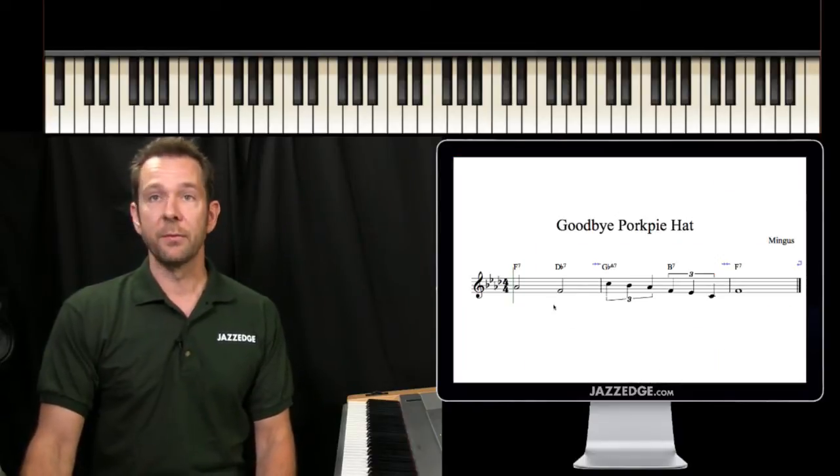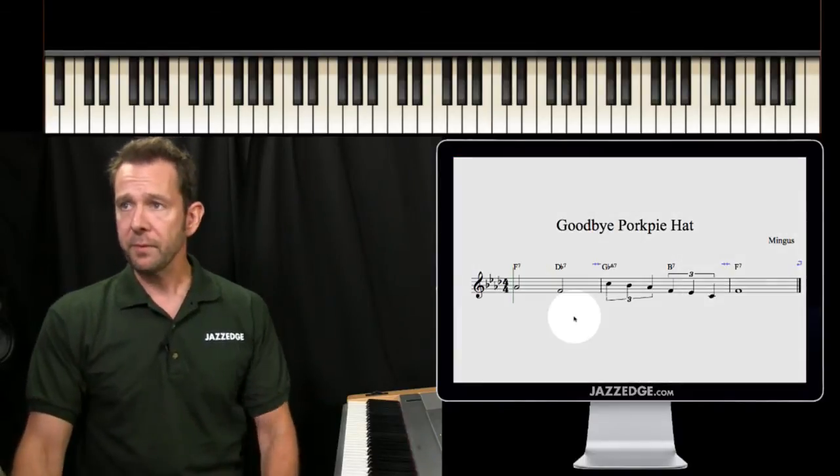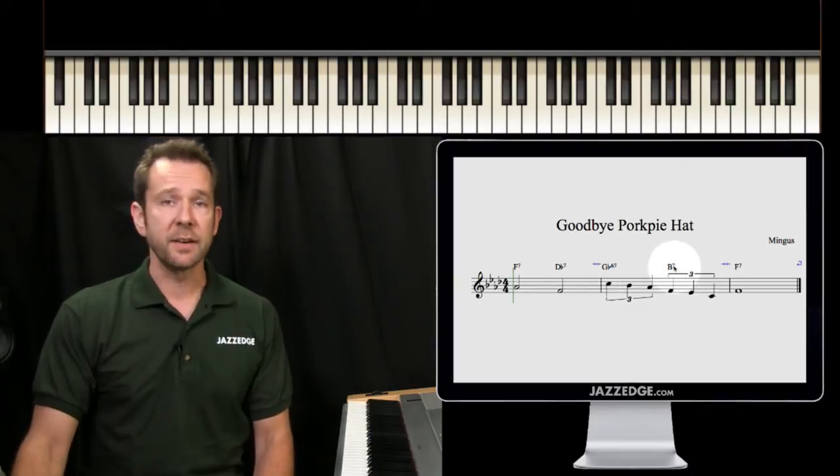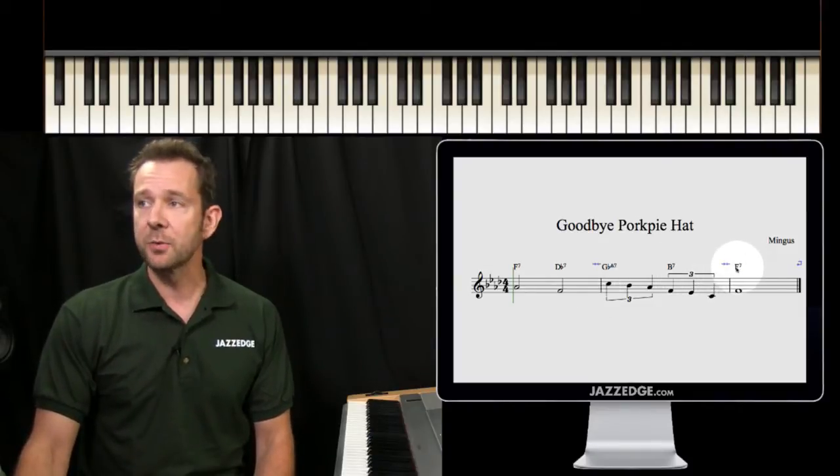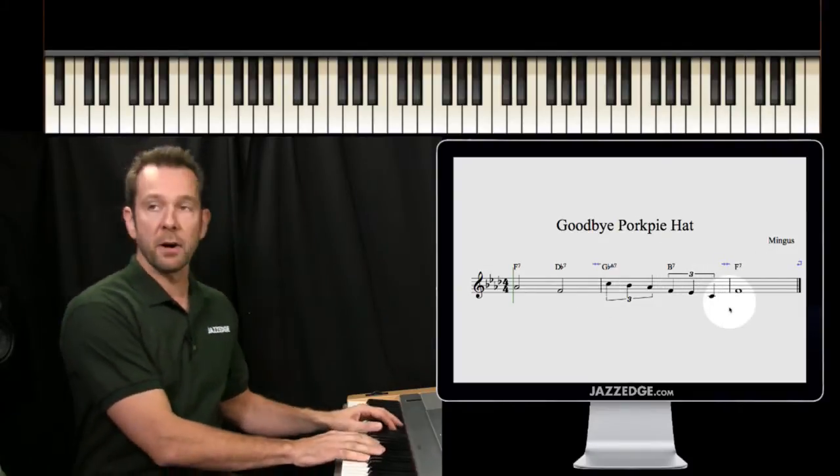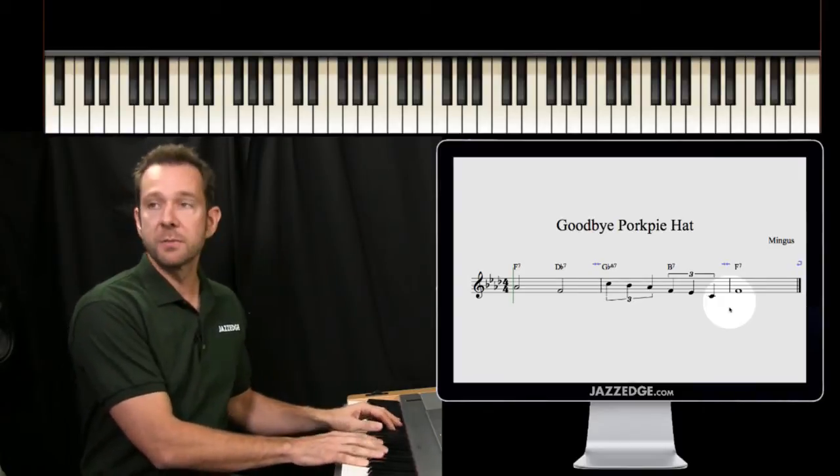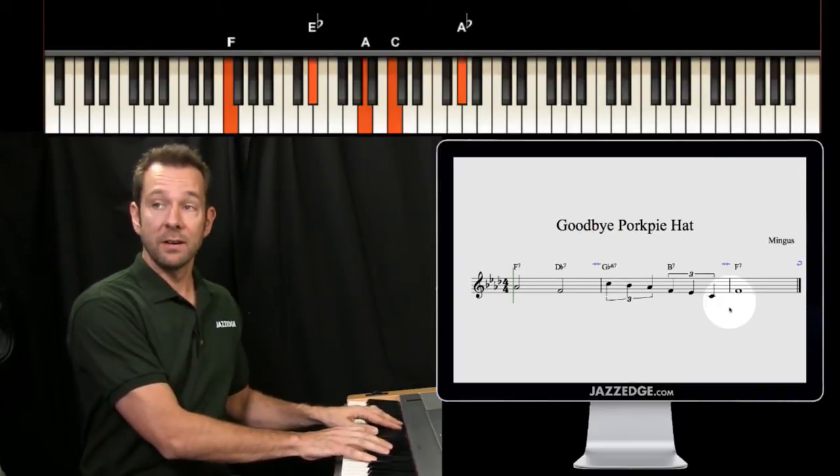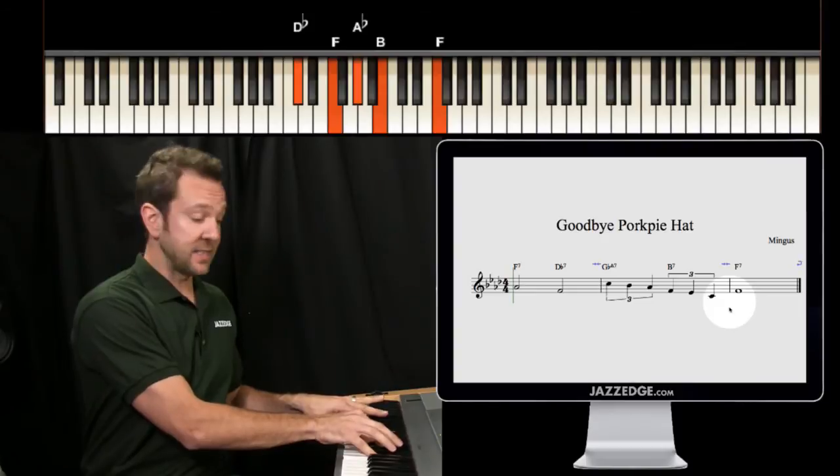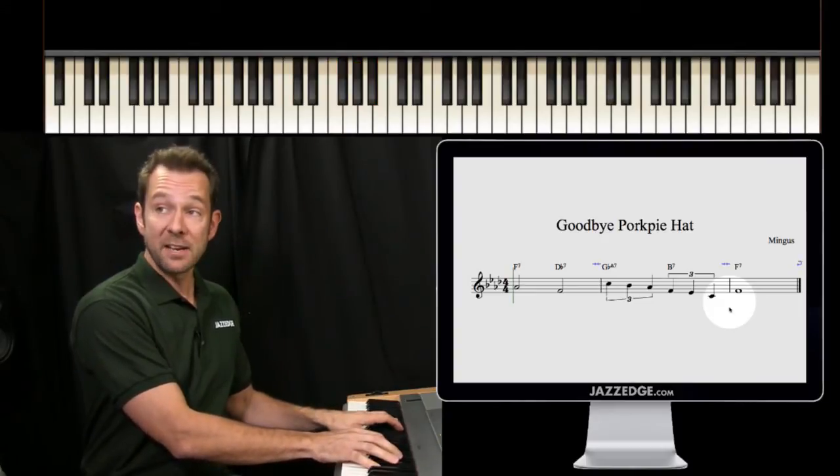So this is what we got here. We got this B7 chord here, which then leads to our F7 chord. Let me just play this last part for you. I'm going to do some simple voicings. And then we go to Db7, and then the Gbmaj7.